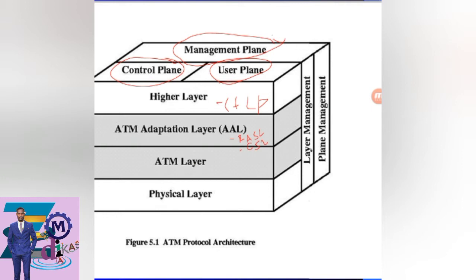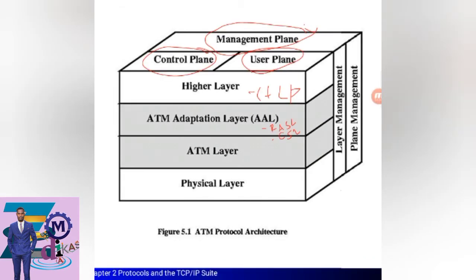To summarize the ATM protocol architecture: the key elements are the management plane, the user plane, and the control plane. Under both the control plane and the user plane, we have the higher layer, the ATM Adaptation Layer, the ATM layer itself, and the physical layer.